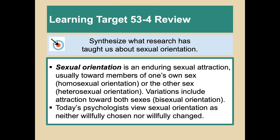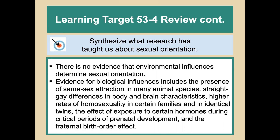Sexual orientation is an enduring sexual attraction toward members of one's own sex or the other sex, or variations toward both sexes — called homosexual, heterosexual, and bisexual orientation. Today's psychologists view sexual orientation as neither willfully chosen nor willfully changed. There is no known evidence that environmental influences determine sexual orientation. Biological influences include the presence of same-sex attraction in many animal species, straight-gay differences in body and brain characteristics, higher rates of homosexuality in certain families and in identical twins, the effect of prenatal hormone exposure during critical periods, and the fraternal birth order effect.